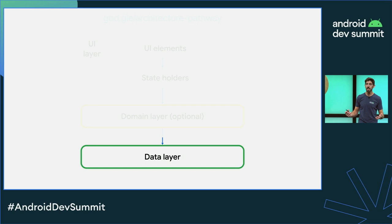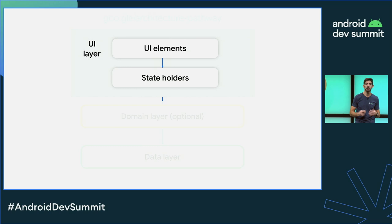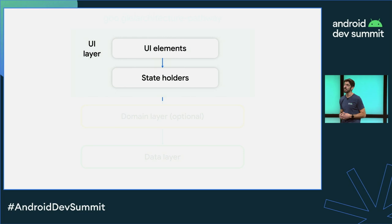Then we have the domain layer, which is going to simplify the potential business logic that could be present in the UI layer. And lastly, we have the UI layer, which is going to display the user information on the screen. Whenever the user information changes due to the user interacting with the device or external input, the UI layer should update to reflect these changes.